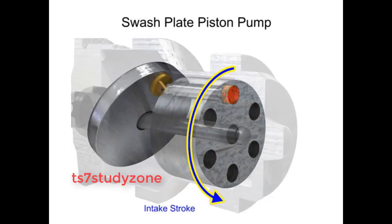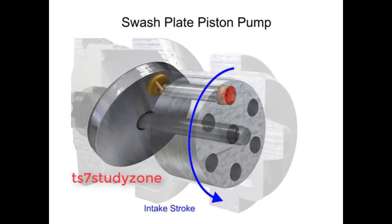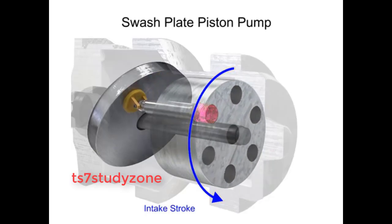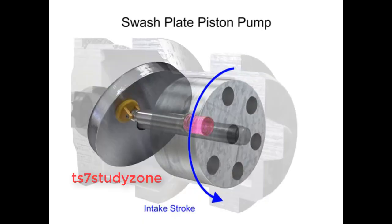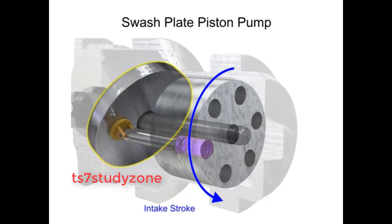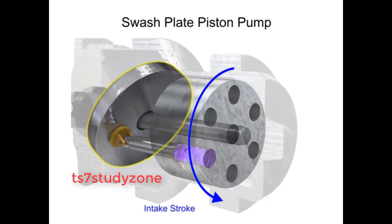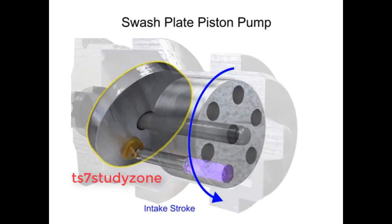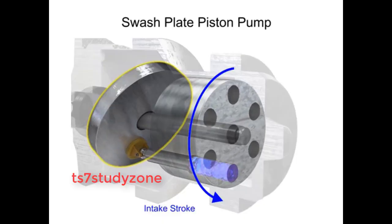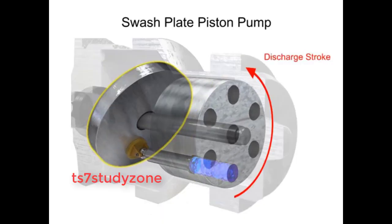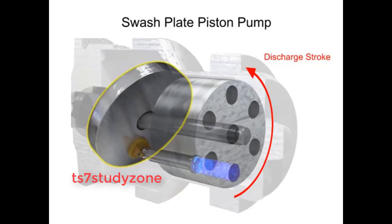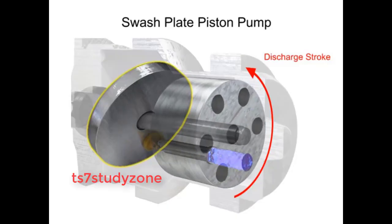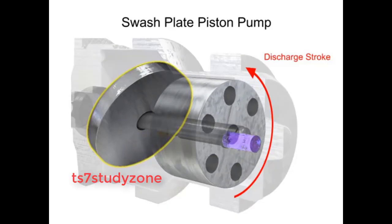On the intake stroke, a spring ensures the pistons pull back and maintain contact with the swashplate, causing fluid to fill the empty cavity left behind. On the discharge stroke, the angle of the swashplate forces the pistons back inside the piston block and discharges the fluid.